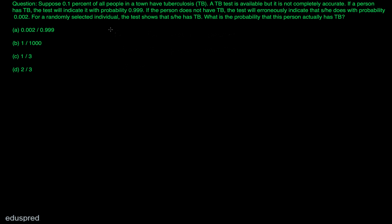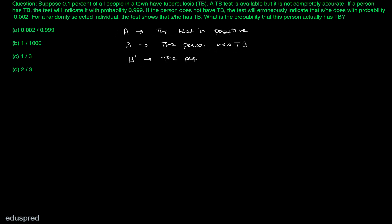First of all, let's define some events. Event A is the event that the test is positive — that means according to the test, the person has TB. Event B is the event that the person has TB. And event B complement is the event that the person does not have TB.